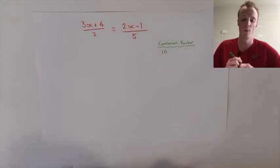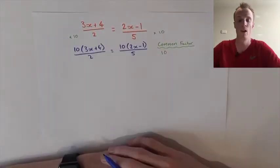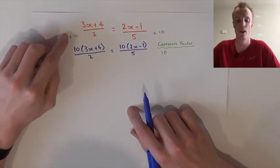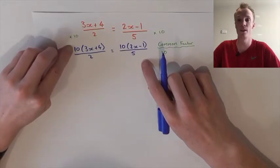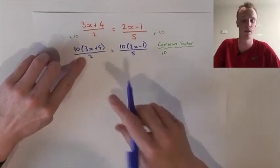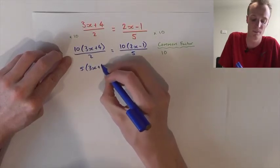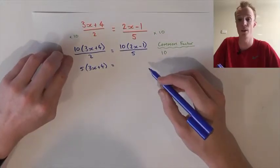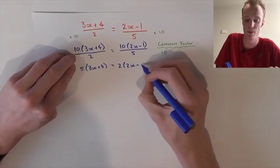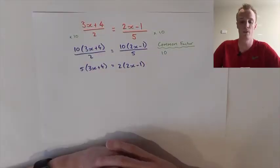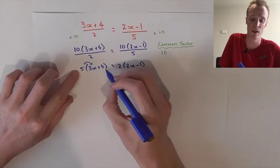Once this common factor has been found, we need to multiply each side of the fraction by the common factor. When we multiply a fraction by a whole number like we have here, it's good to record it this way because we can easily see that we can cancel it down by going 10 divided by 2 on the left-hand side, which gives us 5. That 5 still has to multiply everything inside the brackets. On the right-hand side we can cancel by going 10 divided by 5, which is 2, and that still has to multiply everything inside the brackets. Now we have a problem that looks like the ones we just completed.